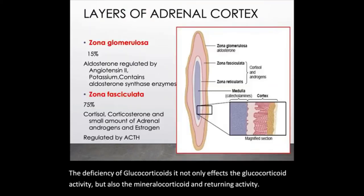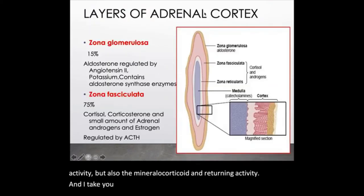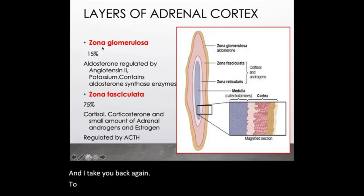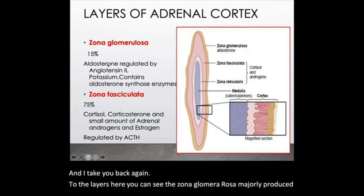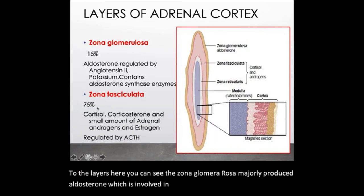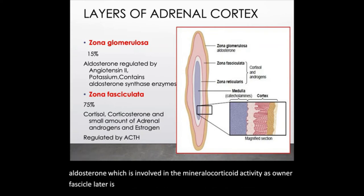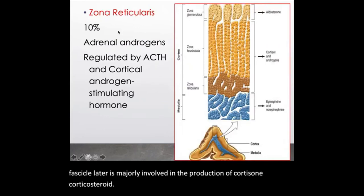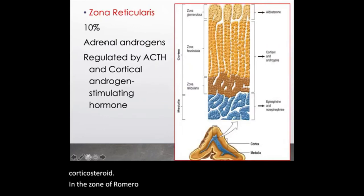Going back to the layers: zona glomerulosa majorly produces aldosterone, which is involved in mineralocorticoid activity. Zona fasciculata is majorly involved in the production of cortisol and corticosterone. Zona reticularis is involved in the formation of androgens or sex hormones.